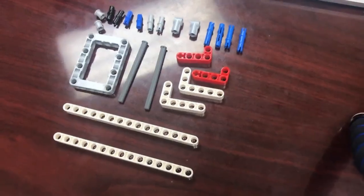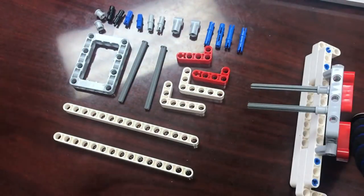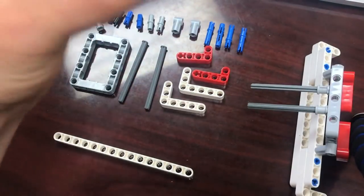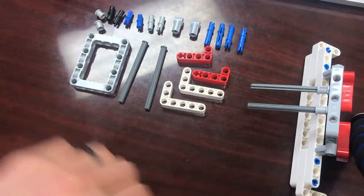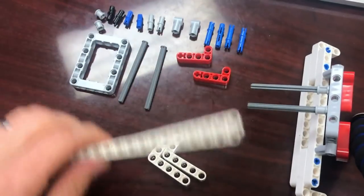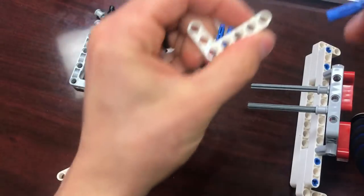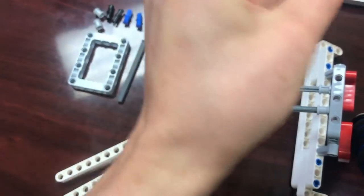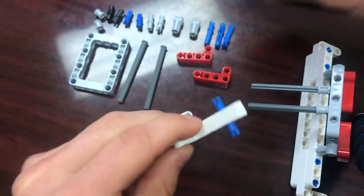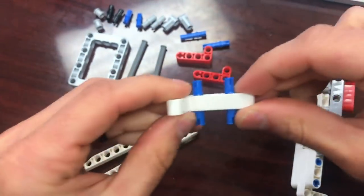These are all the parts that we need to build it and let's just start with these two white beams and these two white 3x5 L beams. So what I'm going to do, I'm going to take a 3x5 L beam and I'm going to stick these two blue three pegs in.